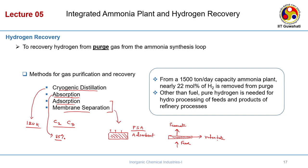The take-home message on why hydrogen recovery is necessary: from a 1500 tons per day capacity ammonia plant, nearly 22 mole percent of hydrogen is removed as purge. You do not want to throw it out — you want to use it for other reactions such as hydroprocessing. That is why these four techniques are very useful. Among them, we will focus on adsorption and membrane separation.